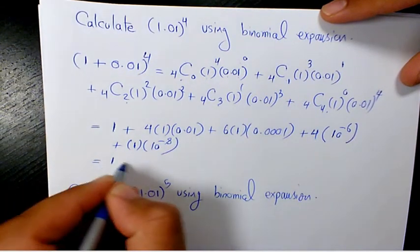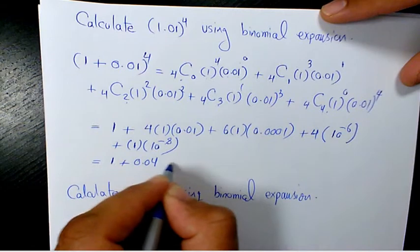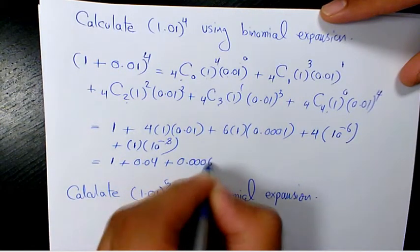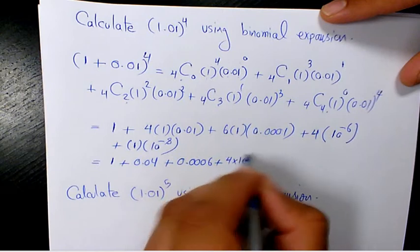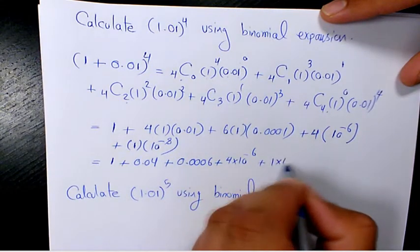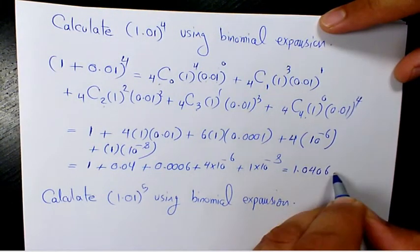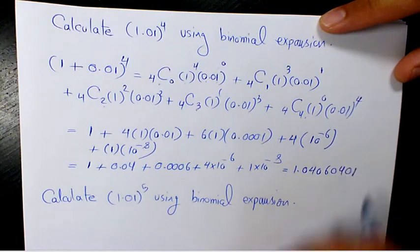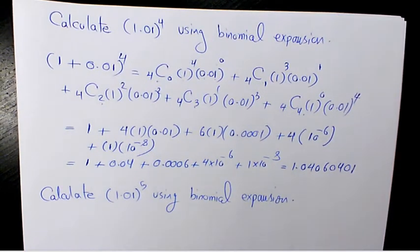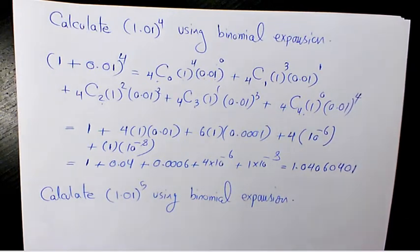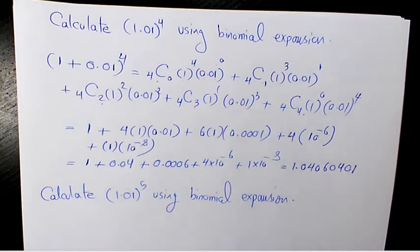So it's going to be 1 plus 0.04 plus 0.0006 plus 4 times 10 to the power of negative 6 plus 1 times 10 to the power of negative 8, which gives us 1.04060401. We can also double check it with the calculator — 1.01 to the power of 4 is 1.04060401. Perfect.